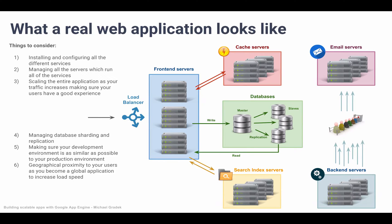If we are a global application with users all over the world, to make our application fast we need to deploy servers in geographical proximity to our users. Imagine we have users in the United States and in Europe. We could just run servers on one continent and make users from the other continent cross over a whole continent to reach us. But if we really care about user experience, we would have to deploy servers in both continents to ensure geographical proximity is as close as possible to our users. This is a painful process because we'd have to deploy our entire application stack on another continent.